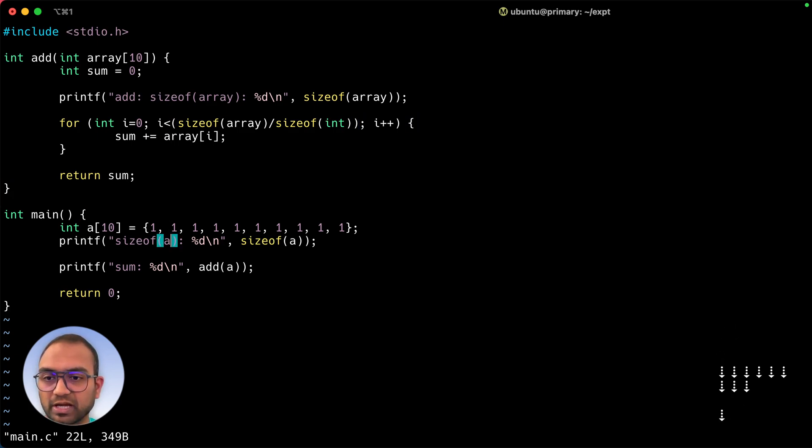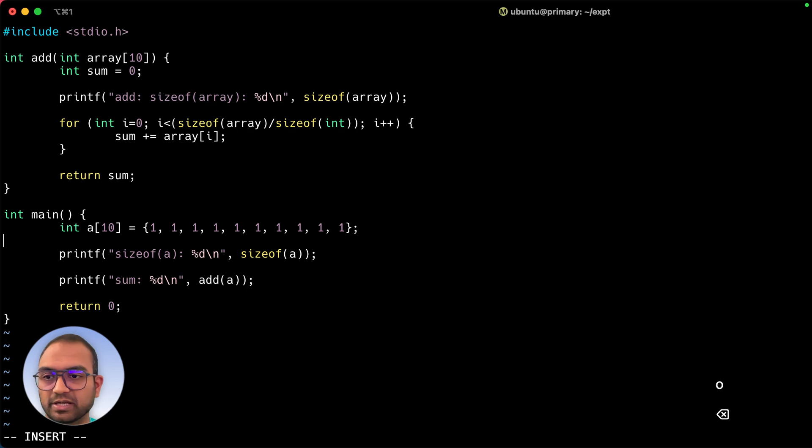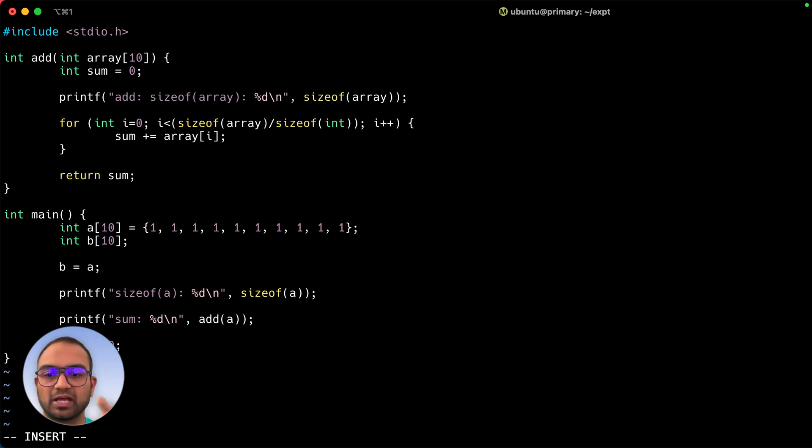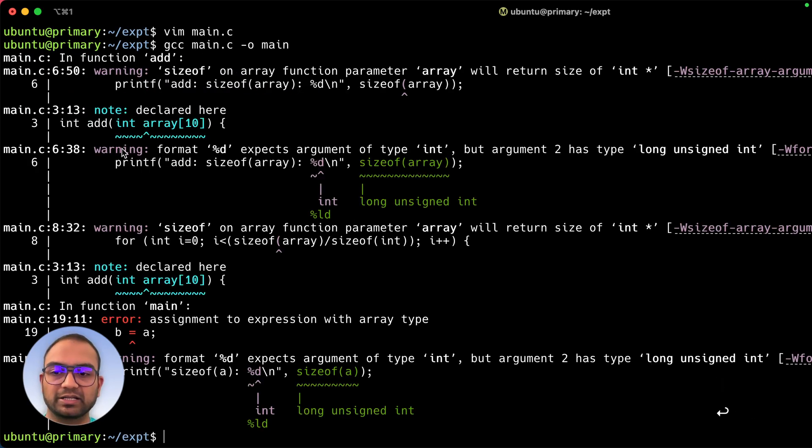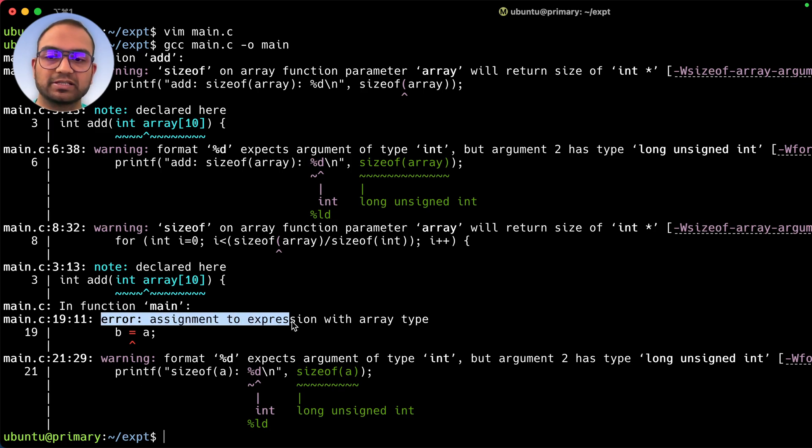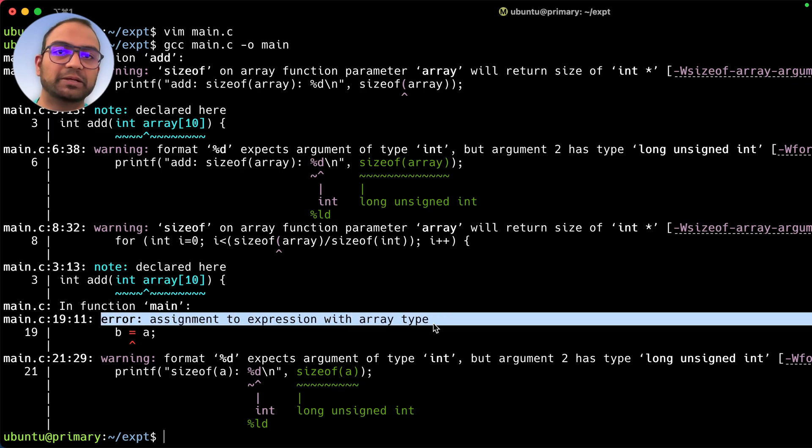So now let's try and assign. Let's say we have another array here which is int b[10]. Then the question is can we do b equals to a, just taking b and reassigning it to a. Let's see if that happens. And that doesn't happen. As you can see here, error assignment to expression with array type. So reassigning an array is not possible. Of course, the elements of a given array can be modified, but you cannot take an array variable and make it point elsewhere. So that's the difference.